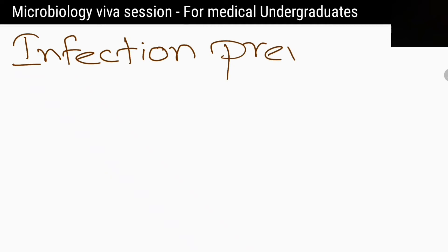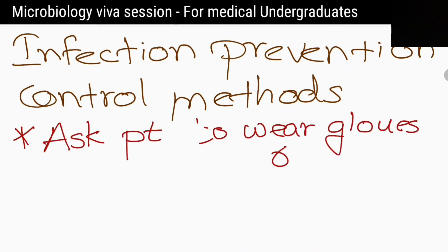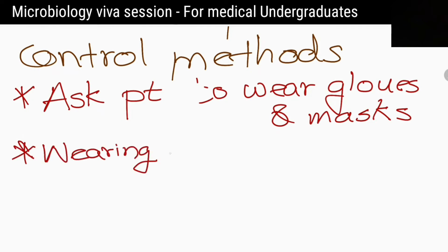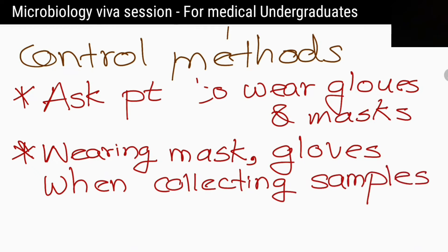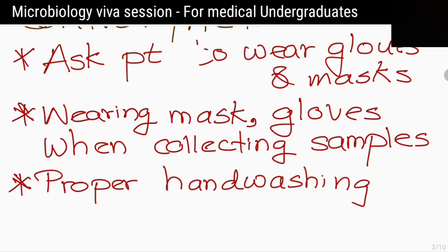What are the infection prevention and control measures that you will adopt when treating a patient diagnosed with tuberculosis in a medical ward? Wearing masks and gloves when collecting the sample, and proper hand washing after examination or any procedure.